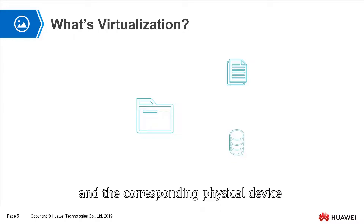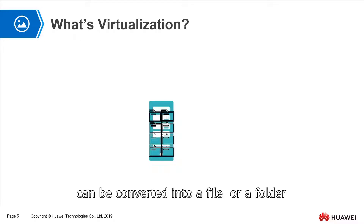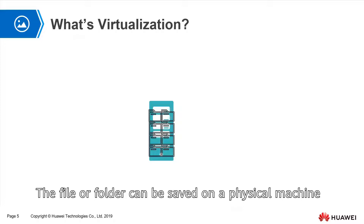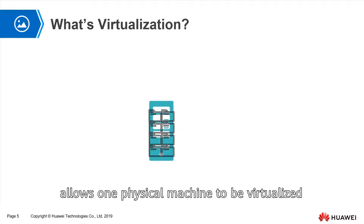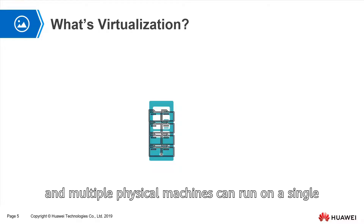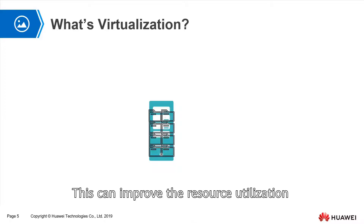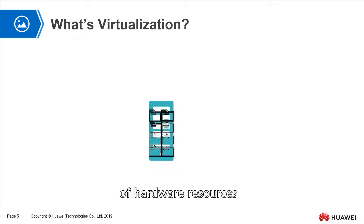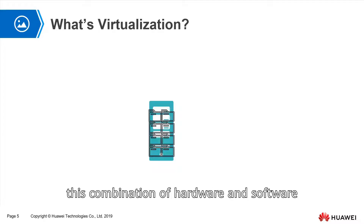The corresponding physical device belongs to the physical hard disk. Since a physical machine can be converted into a file or folder, that file or folder can be saved on a physical machine. This process allows one physical machine to be virtualized into multiple virtual machines, and multiple virtual machines can run on a single physical machine, each running its own operating system. This improves resource utilization of physical hardware and reduces waste of hardware resources.